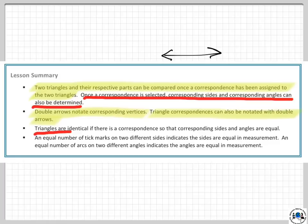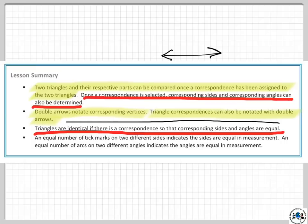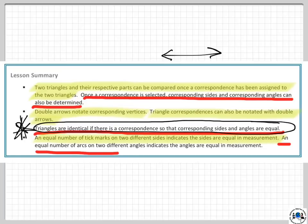Triangles are identical if there is a correspondence so that corresponding sides and angles are equal. And that's the only way you have identical triangles. Very important point, is that one right there. An equal number of tick marks, and again, we're talking about notation here, equal number of tick marks on two different sides indicates the sides are equal in measurement, and then an equal number of arcs on two different angles indicates the angles are equal in measurement.